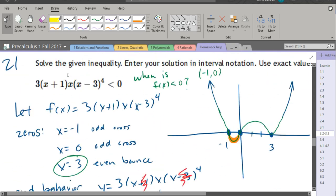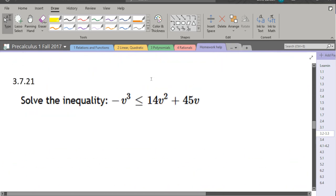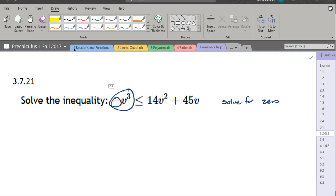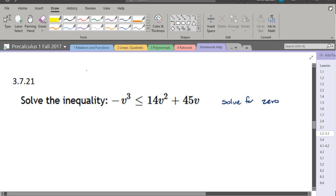That being said, we're going to use a little bit of algebra. We're going to get all terms on one side. We're solving for zero. Now, I like my highest power term to be positive, so what I'm going to do is add v cubed to both sides. So we got positive v cubed plus 14v squared plus 45v.